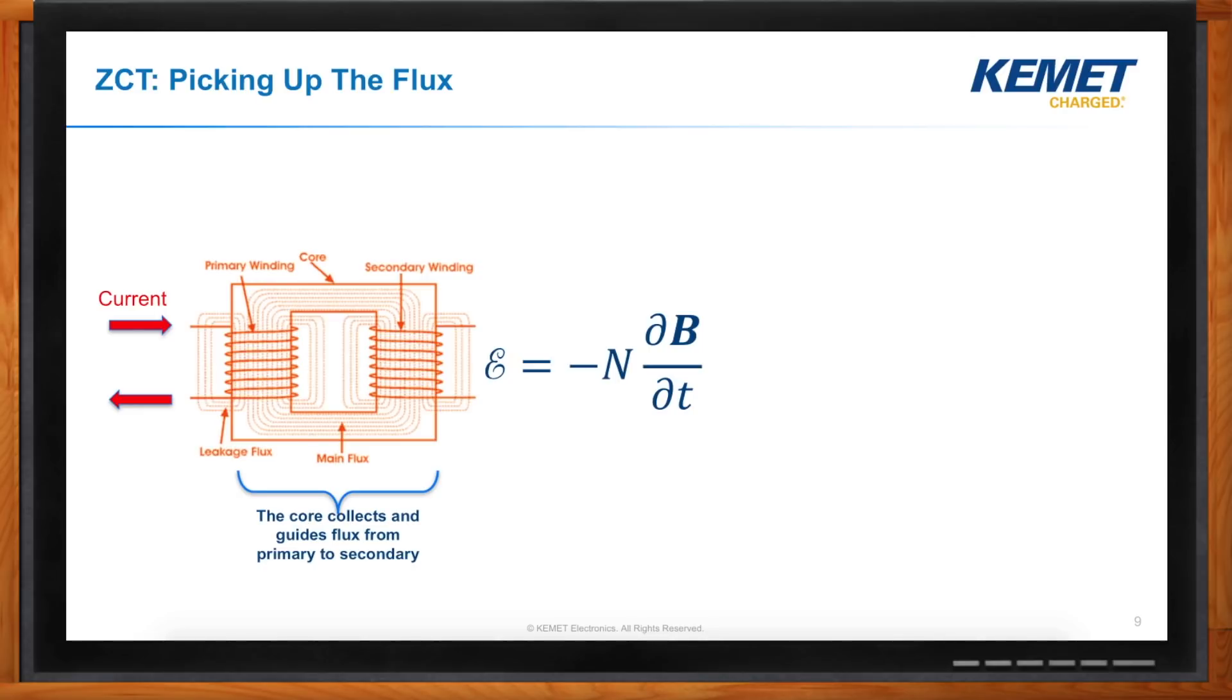In the case of a current sensor, a similar thing is happening. So, imagine you have a wire that's carrying AC current and you feed that through the bore, through the core of a toroidal current sensor. That input current will generate an electromagnetic field. That electromagnetic field will be picked up by the windings of the current sensor and it will generate a voltage.